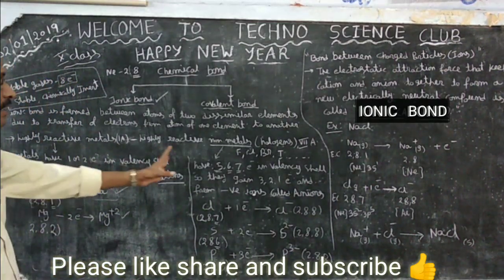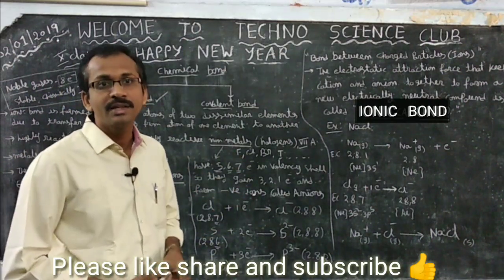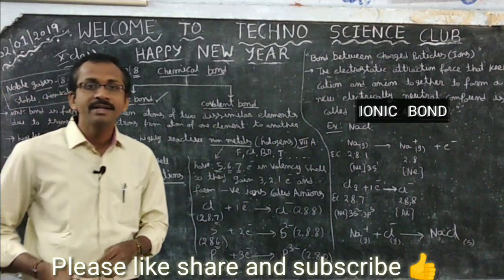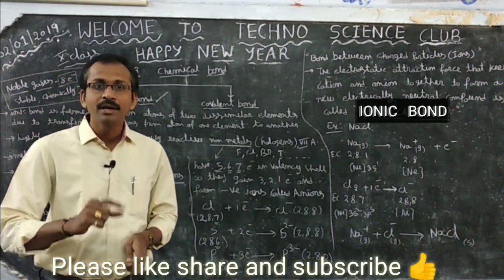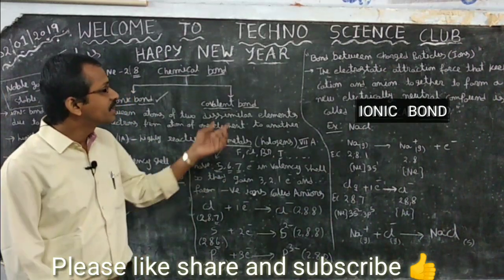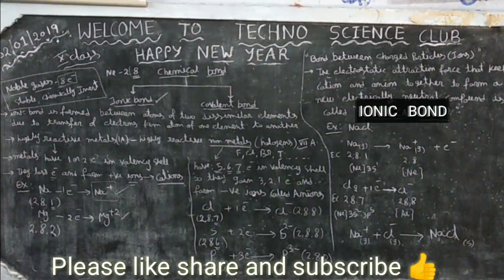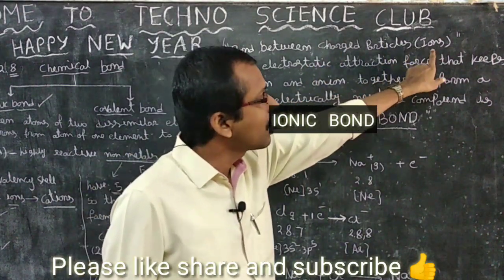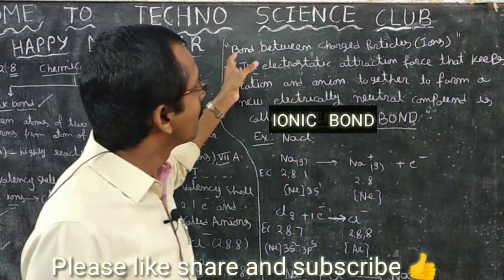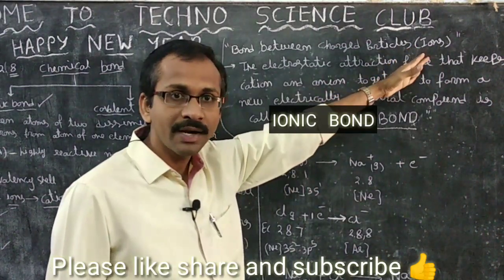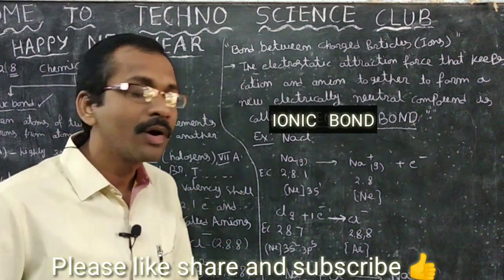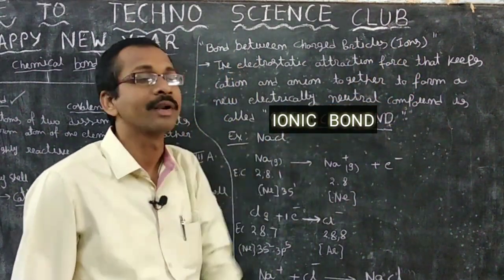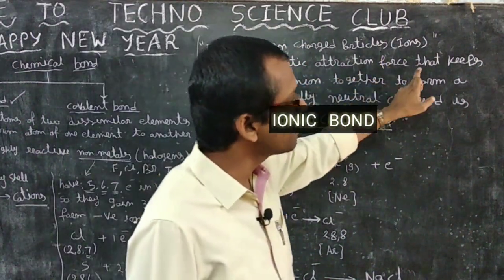These anions and cations — positively charged cations and negatively charged anions — are mixed together, and there is an attraction between them. By this electrostatic attraction they get attracted, come together, and form a chemical bonding called an ionic bond. The definition of ionic bond: the bond between the two charged particles — ions that are cation and anion — is called an ionic bond. More precisely, it is the electrostatic attraction force that keeps the anion and cation together.